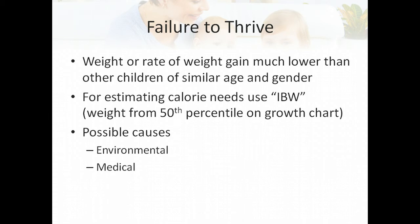There's nothing totally magical about the 50th percentile — that child's needs may actually be a little above or below — but it gives you a starting place. In terms of causes of failure to thrive, the two main categories are either an environmental cause or a medical cause. Environmental causes can include lack of access to adequate food, food insecurity, neglect, or abuse. Medical causes may include malabsorption or other issues that substantially increase metabolic rate. If a child is not gaining weight as expected, it's important to dig into these potential issues.